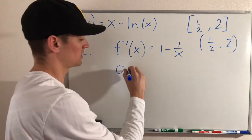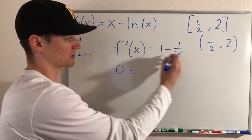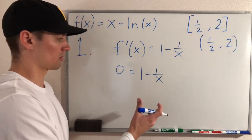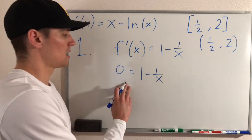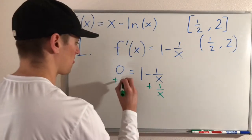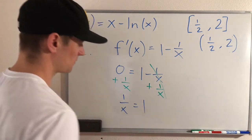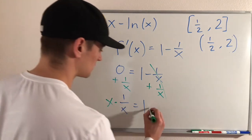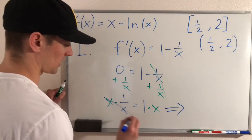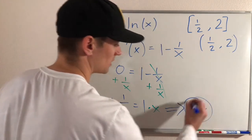To find our critical numbers, we need to figure out where our derivative equals zero. So we take our derivative and set it equal to zero, then solve for x. Adding one over x to both sides gives us one over x equals one, and then multiplying both sides by x gives us x equals one. So x equals one is one of our critical numbers.